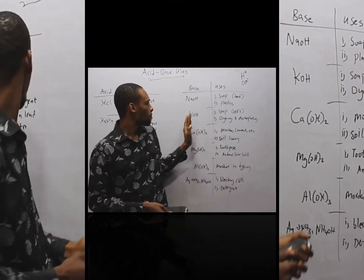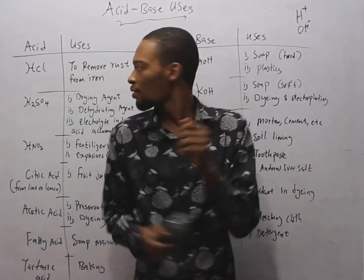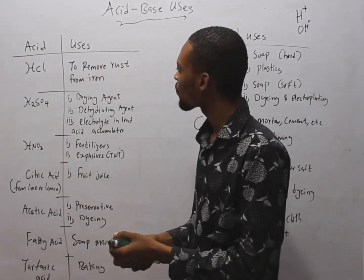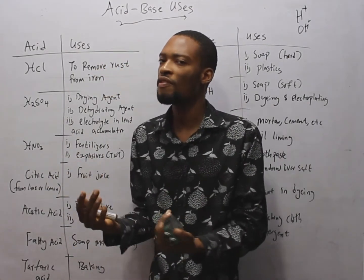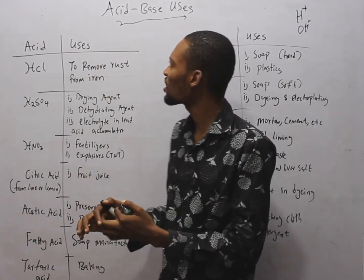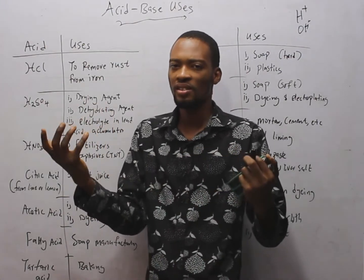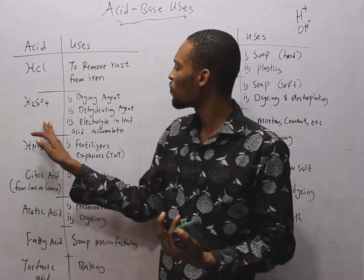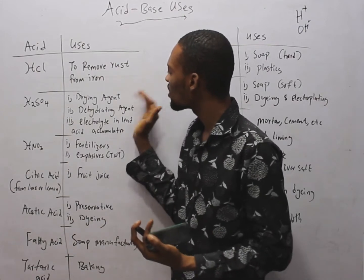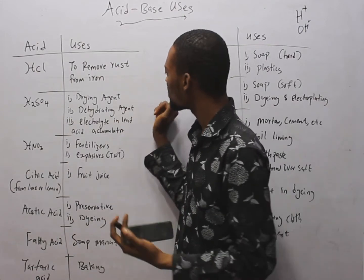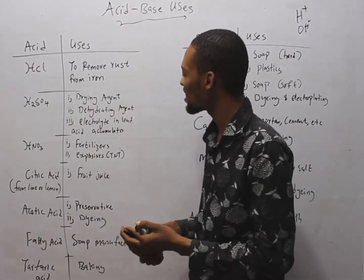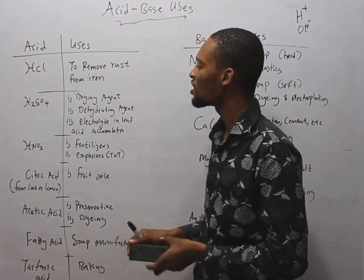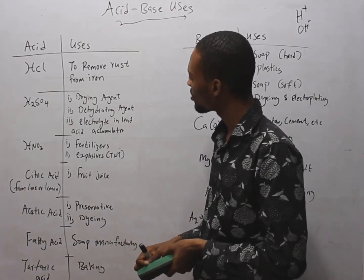What is hydrochloric acid used for? It is used to remove rust from iron. H2SO4 is used as a drying agent, dehydrating agent, and electrolyte in a lead acid accumulator. There is a big difference between drying and dehydration.